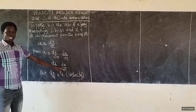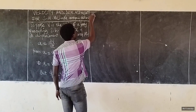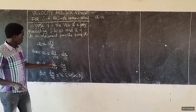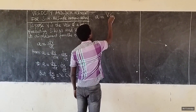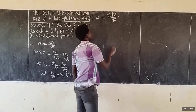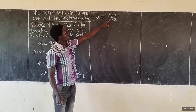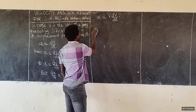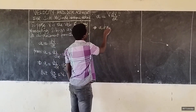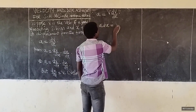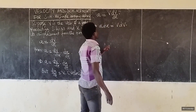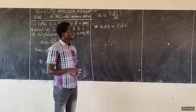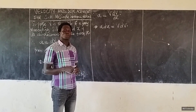This implies that A = dV/dX times dX/dT. But dX/dT is actually the rate of change of displacement, which is velocity V. So we are going to replace it, and therefore we have that acceleration A is equal to V times dV/dX. We then apply integration on both sides of that equation.